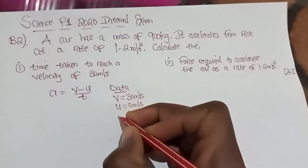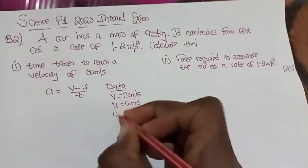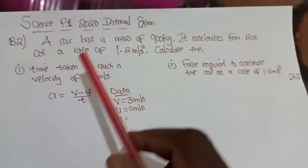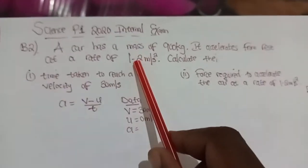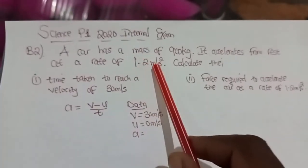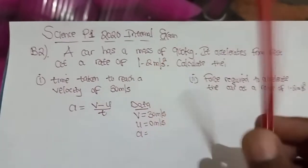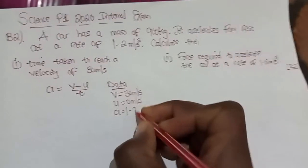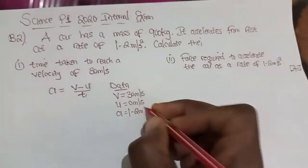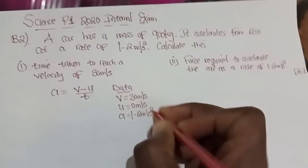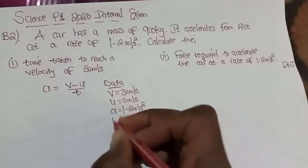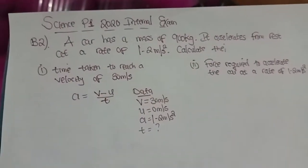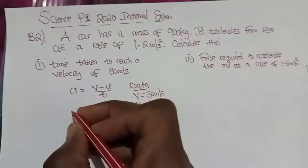As for the acceleration, it has been given — the acceleration is 1.2 m per second squared. We're going to write that down. For the time taken, we don't have a value, and this is our unknown — this is what we need to find.